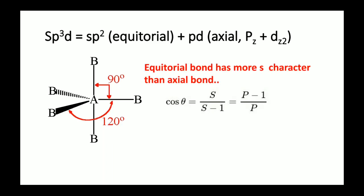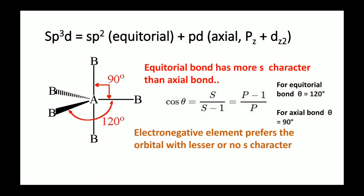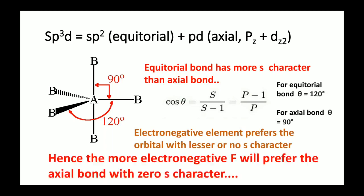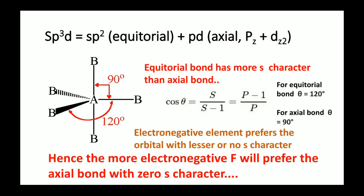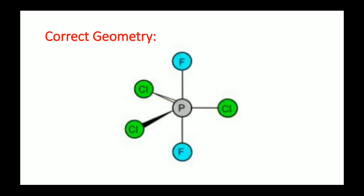The axial bond does not have any S character, and the equatorial bond has more S character. This is justified by Bent's Rule: if we put θ = 90° for the axial bond in the formula, we get S character equal to zero. Hence along the axial bond there is no S character, and the more electronegative atom will prefer the hybridized orbital with no S character. Therefore, the more electronegative fluorine prefers the axial bond with zero S character, meaning both fluorines are in the axial position and three chlorines are in the equatorial position.